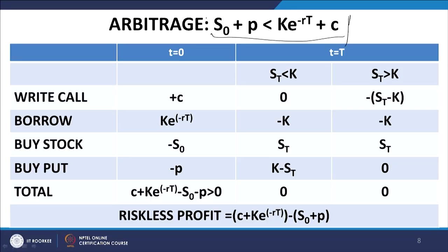So we are given this condition. At the very outset, if no arbitrage is to prevail, the equality has to hold. But in actual practice this less-than inequality is holding for the moment — this quantity is smaller, this quantity is larger. Therefore what I will do is: I will go long on this quantity and short on this quantity. In other words, I will buy the left-hand side and sell the right-hand side, because if I buy at a lower price and sell at the higher price, I make a profit.